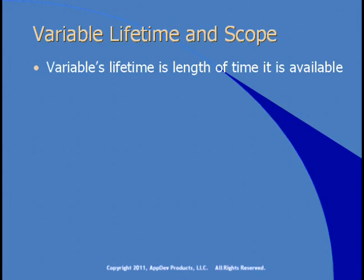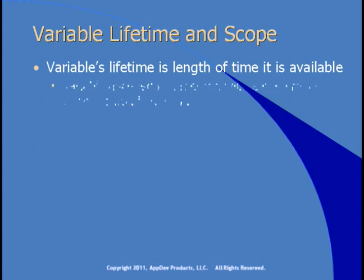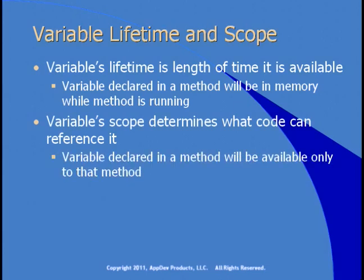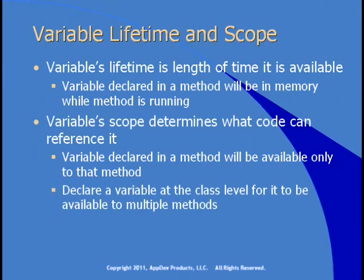Variables have a lifetime and a scope. The lifetime of a variable represents the length of time it is available for use in your code. If you declare a variable in a method, it will be in memory while the method is running; when the method is done, the variable is no longer in memory. The scope of a variable determines what code can use it — a variable declared in a method is available only to that method. To have a variable available to multiple methods, declare it at the class level, where it becomes available to all methods in that class.